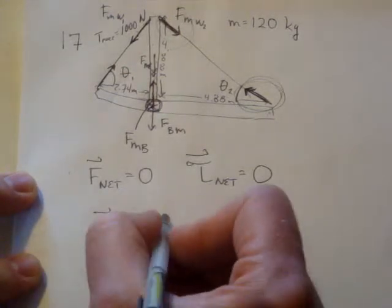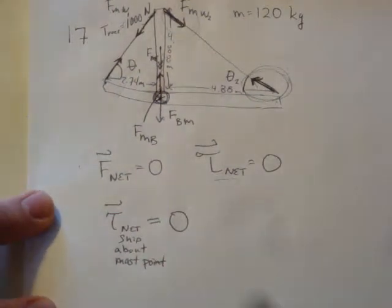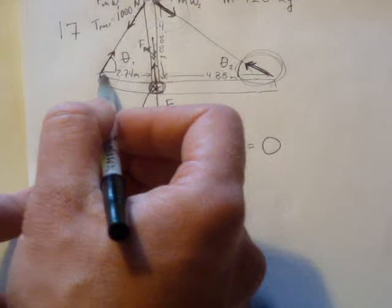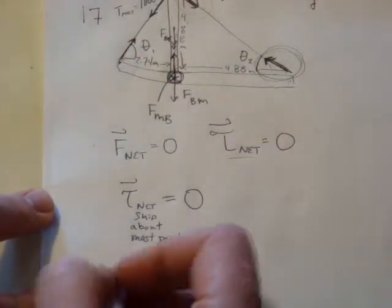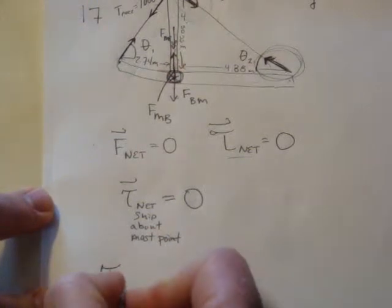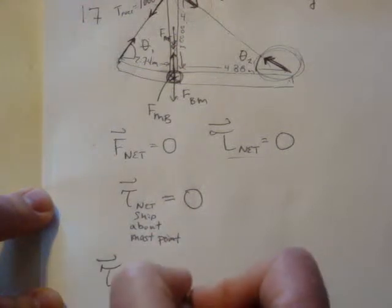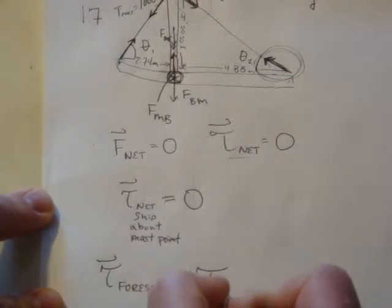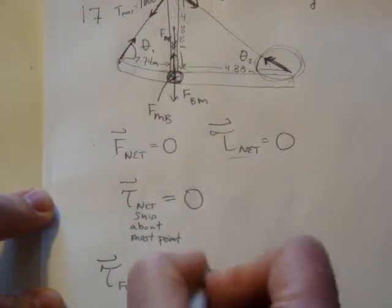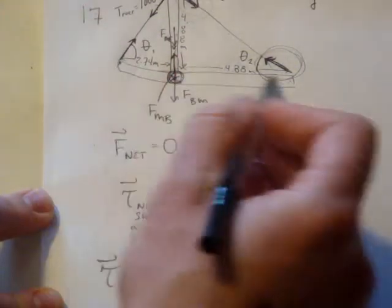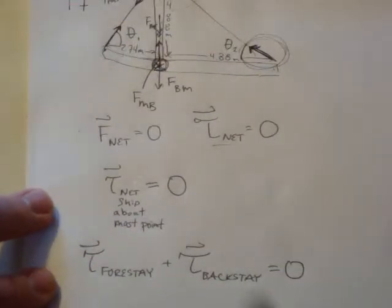So the net torques are going to be equal to zero because that's my condition. So now I just need to count up all of the torques. Well, how many torques are acting on this? We have one here. We have the torque due to the forestay plus the torque due to the backstay. And that's going to be equal to zero. There's no other forces acting on this particular part of the ship.